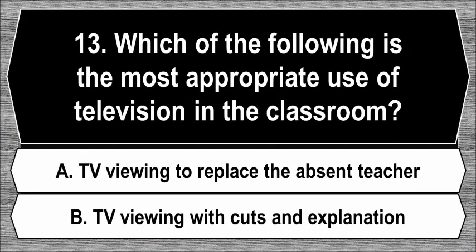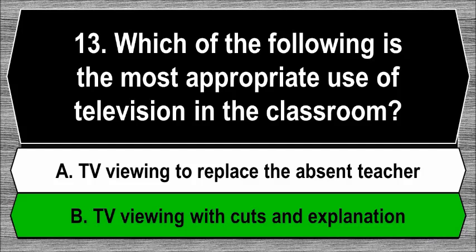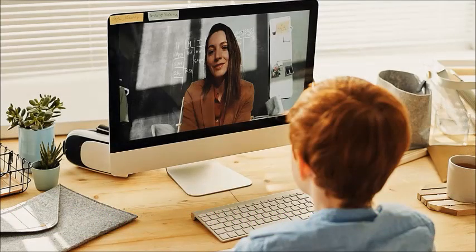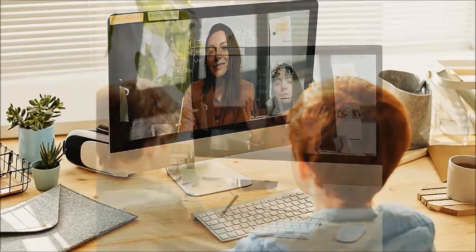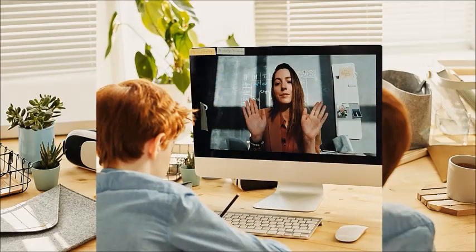Question 13. Which of the following is the most appropriate use of television in the classroom? A. TV viewing to replace the absent teacher. B. TV viewing with cuts and explanation. The best answer is B, TV viewing with cuts and explanation. Technology cannot replace a teacher. It can help the process of learning, but it cannot replace the role of the teacher, since human interaction cannot be replaced by computers and human skills cannot be taught by technology. Technology helps implement distance learning, with clear instruction and guidance of the teacher.